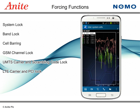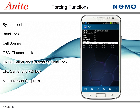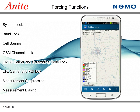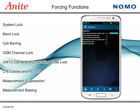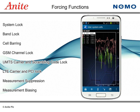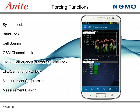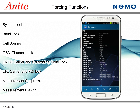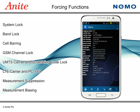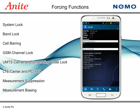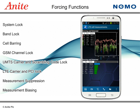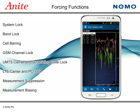Furthermore, it is possible to control handovers using measurement suppression to prevent handovers, or measurement biasing to assist handovers to a specific sector. These features make it easy to test specific cells in the network without worrying about the test system handing over to neighboring base stations, enabling more accurate testing, troubleshooting, and optimization of mobile networks, and improving the network's quality as well as the usability of mobile services.